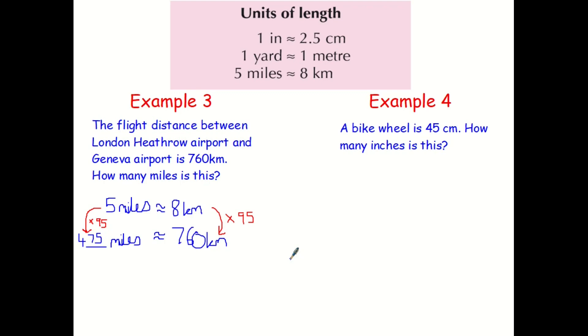Example 4. A bike wheel is 45 centimetres. How many inches is this? Well, I'm going to quote the important conversion, which is that one inch is approximately equal to two and a half centimetres. And then I'm going to say, well, I'm going to use part of the question, which is that a bike wheel is 45 centimetres. So I'm putting that there and I want to figure out how many inches it is, so my unknown is on this side.